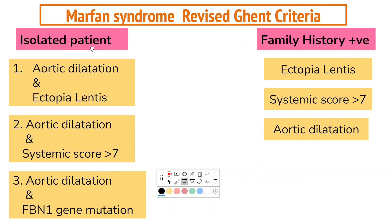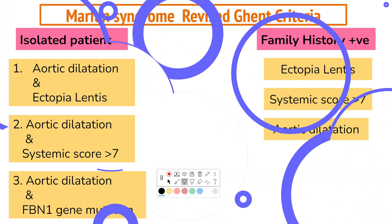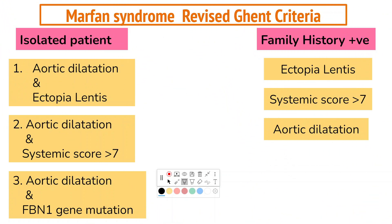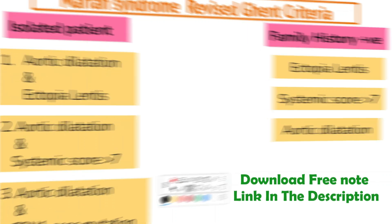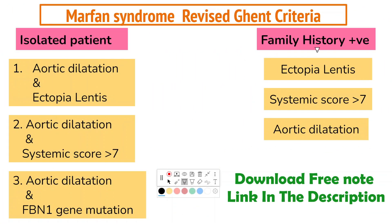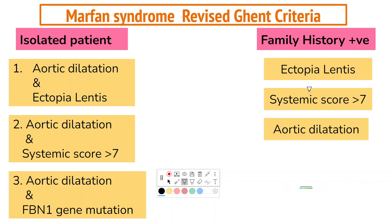In the absence of family history, the presence of more than two features is sufficient for an unequivocal diagnosis of Marfan syndrome. One of two cardinal features is required: either an FBN1 gene mutation or a systemic score meeting the threshold. Experts note that while the new diagnostic criteria makes a definitive diagnosis take longer, it reduces the risk of premature or missed diagnosis. In the presence of family history, ectopia lentis is sufficient for diagnosis. A systemic score of more than or equal to seven with family history is also sufficient. Aortic dilatation with a Z-score of more than two above age 20, or more than or equal to three below age 20, along with family history, is also sufficient for the diagnosis.